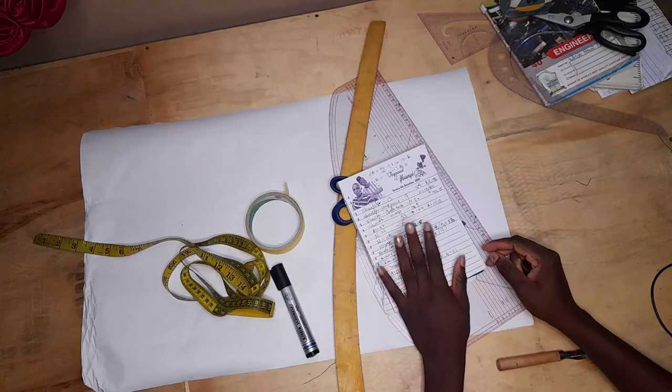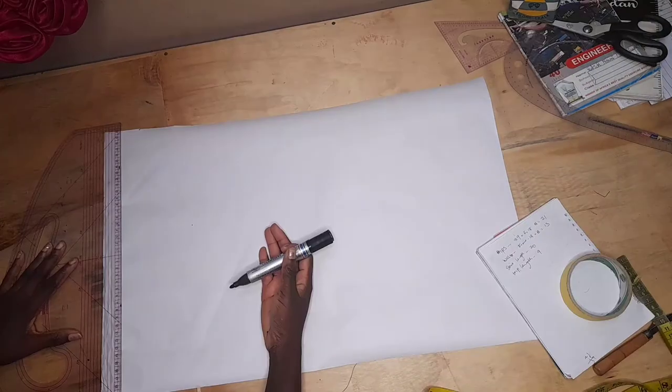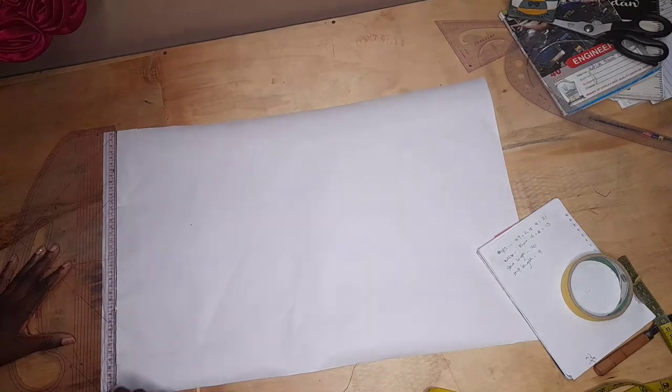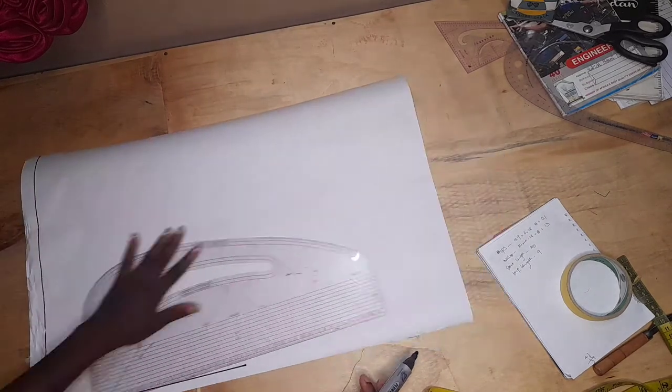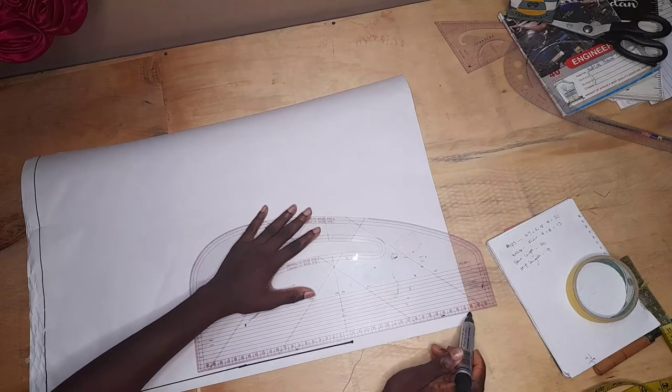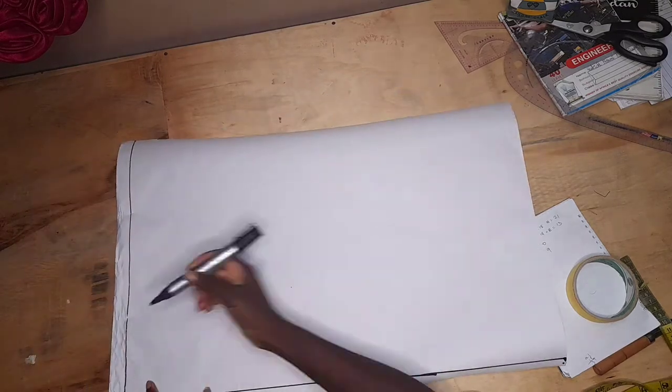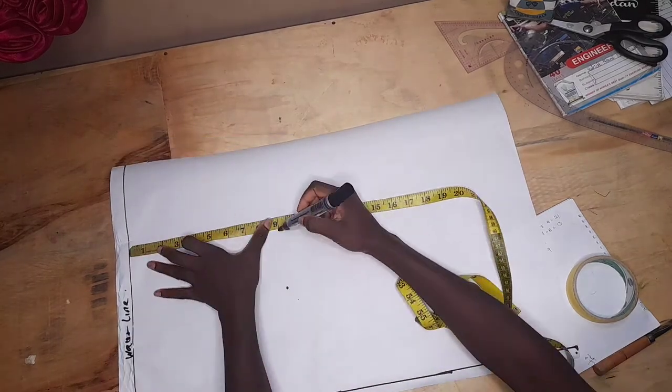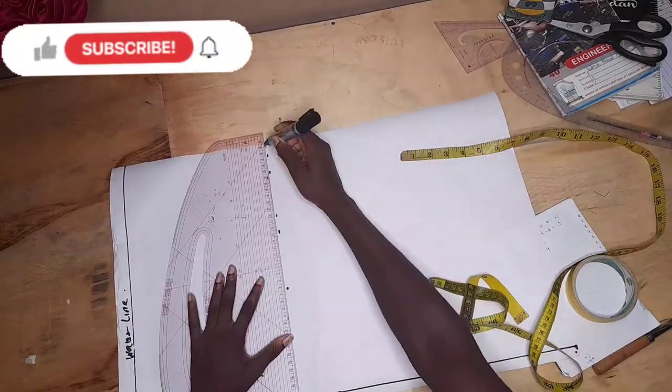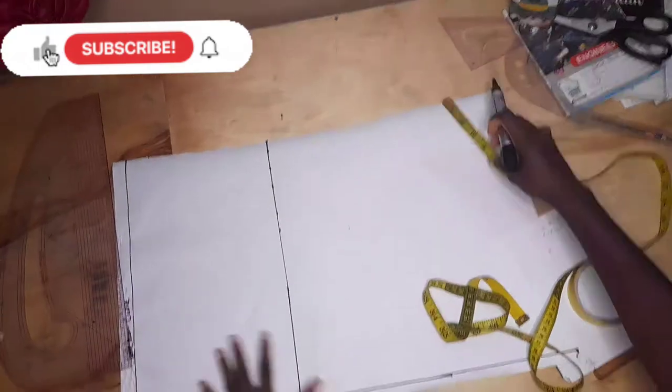Go ahead and draw your waistline and your sideline. Please don't forget to label it. Then you go ahead to take your waist to hip line and your waist to full length.